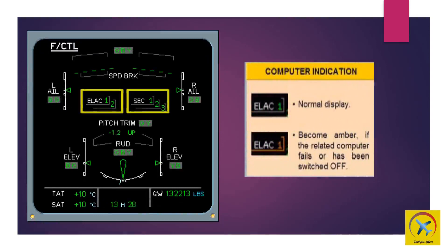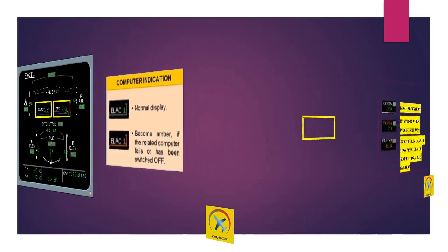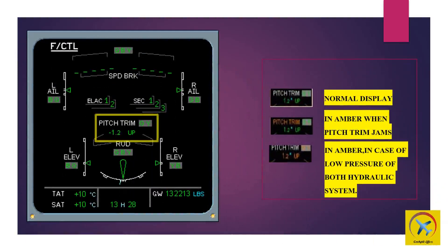In this presentation we are going to look at the eCAM flight control page computer indications and their meaning. There are five computers shown in the eCAM flight control display page: 2 FAC computers and 3 SEC computers. Normal display of a computer shows in white and green; it becomes amber if the related computer fails or has been switched off.